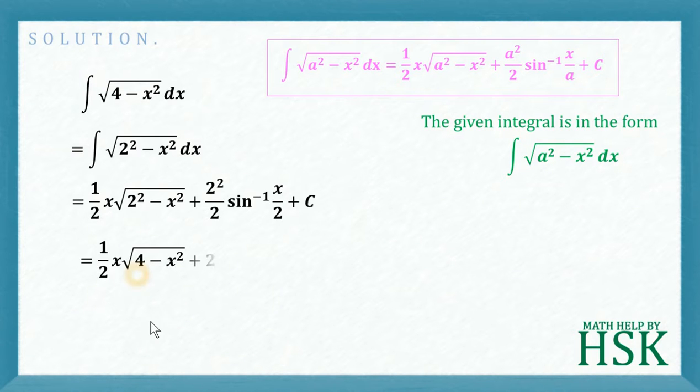So I am going to get first term as 1 by 2 x square root of 4 minus x squared. There's 2 squared upon 2 can be written as 2, and sine inverse of x upon 2 as it is, plus c, which is my answer.